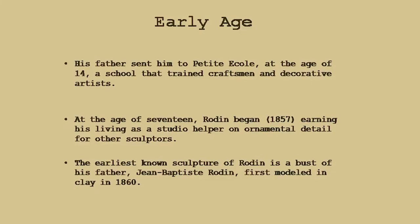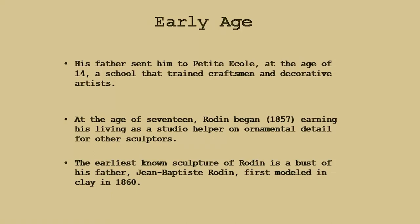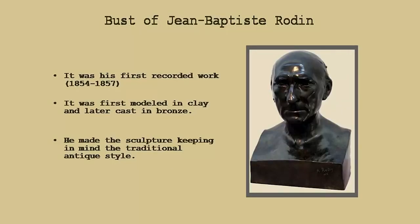Rodin's father sent him to the Petite École at the age of 14, a school that trained craftsmen and decorative artists. You can imagine the kind of skill he acquired at a very young age. At the age of 17, Rodin began earning his living as a studio helper on ornamental detail for other sculptors. The earliest known sculpture of Rodin is a bust of his father Jean-Baptiste Rodin, first modeled in clay in 1860. This tells us that Rodin was from the outset academically very well trained.